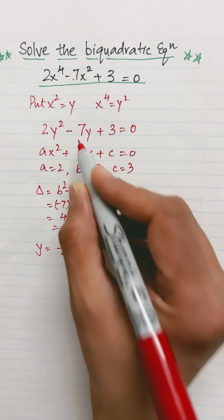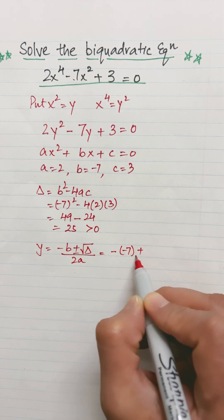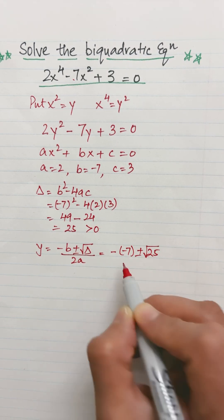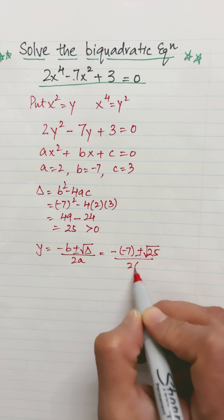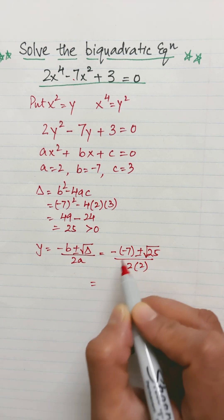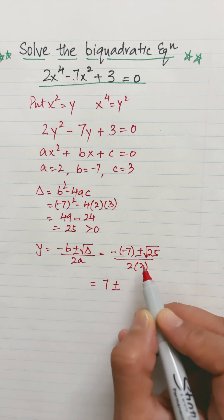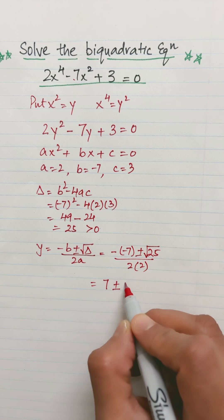So it will give me minus b is minus 7 plus minus square root of discriminant is 25, 2 times 2. It will give me minus minus plus, so 7 plus minus square root of 25 is 5 over 4.